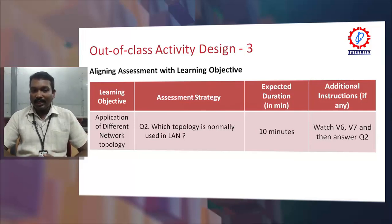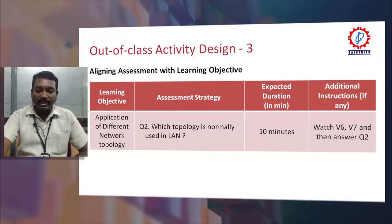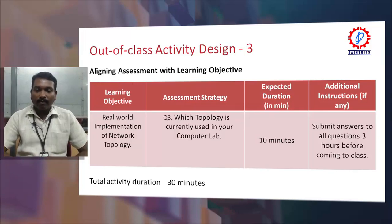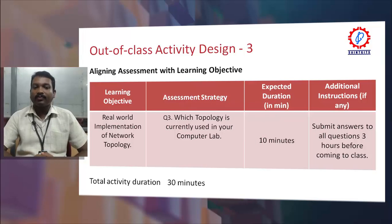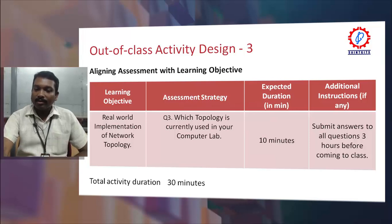Students then need to apply the knowledge they have gained. They need to plan which topology is normally used in a LAN, for which they watch videos V6 and V7 and answer the corresponding question. They also identify which topology is currently used in their own computer lab — a real-world implementation exercise. Once familiar with all these topics, students can clearly identify the topology being used in their lab.